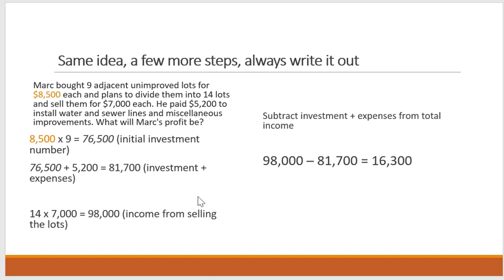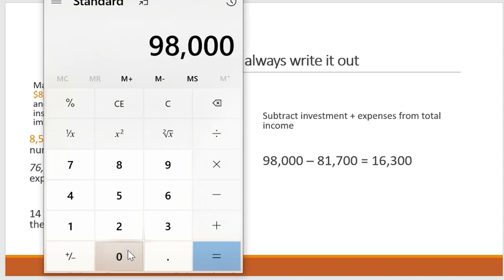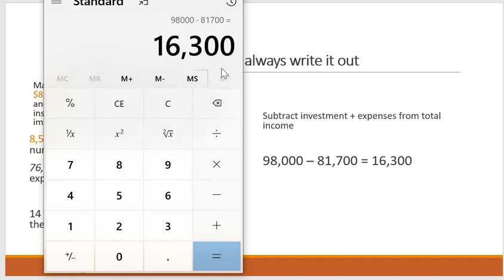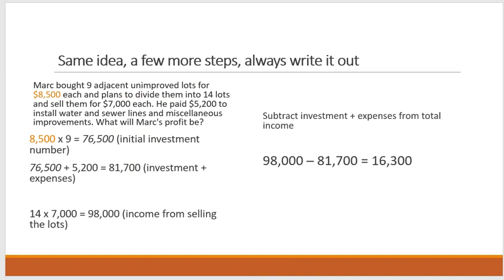To get the income from selling the lots, it would be $98,000 — that's 14 times $7,000, since he plans on breaking them into 14 lots and selling them for $7,000 each. Now we have his total income, but we have to subtract the investment and expenses. Remember SOAR — subtract investments and expenses from total income. So $98,000 minus $81,700 — Mark's profit is going to be $16,300 once it's all said and done.